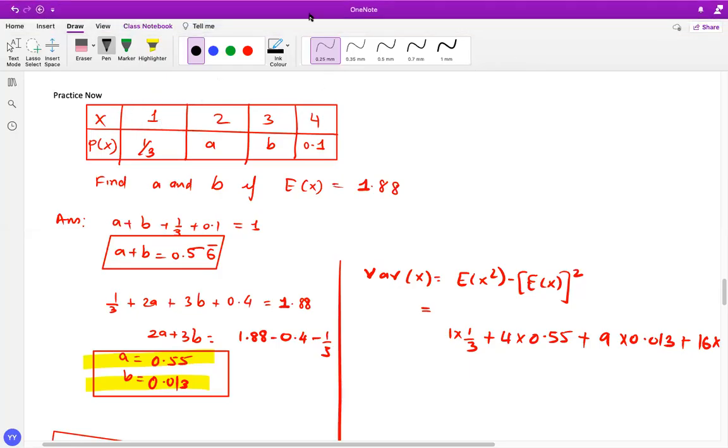Now this was the question that we discussed in the last segment here. We have got the example to find out the values of A and B, and then you calculate the standard deviation and variance.